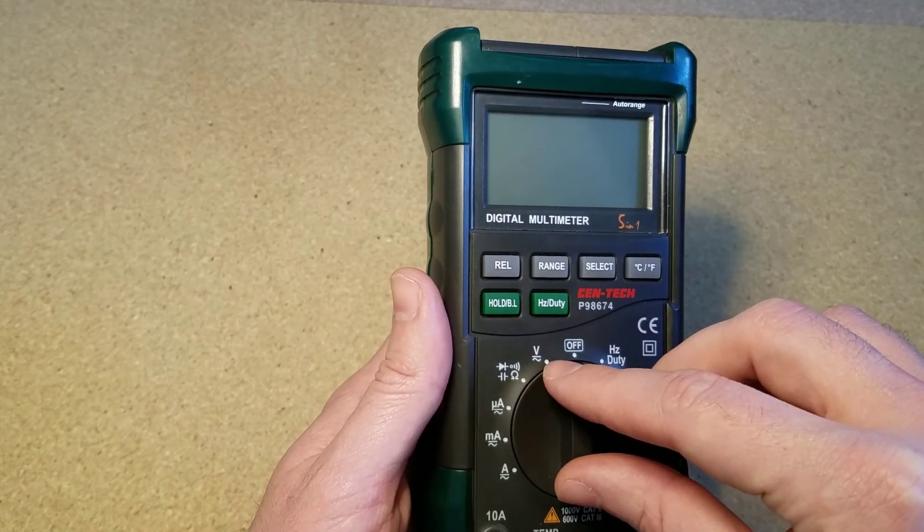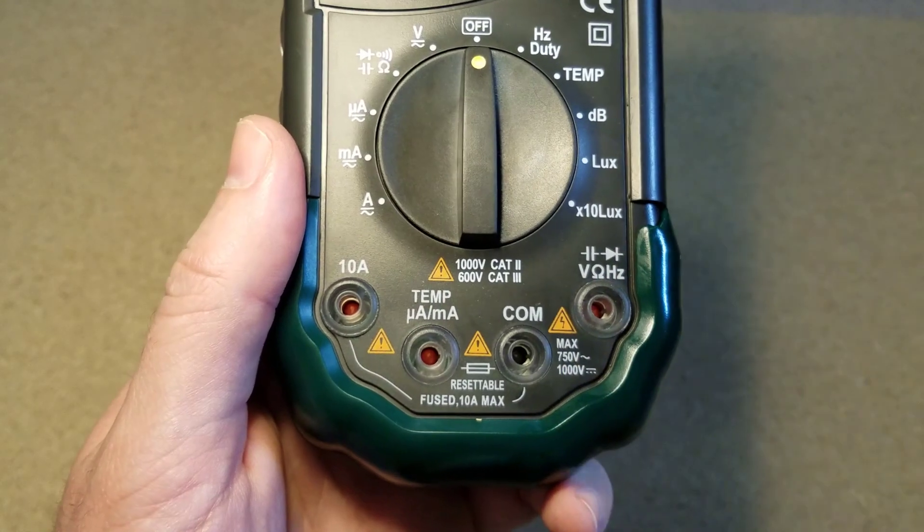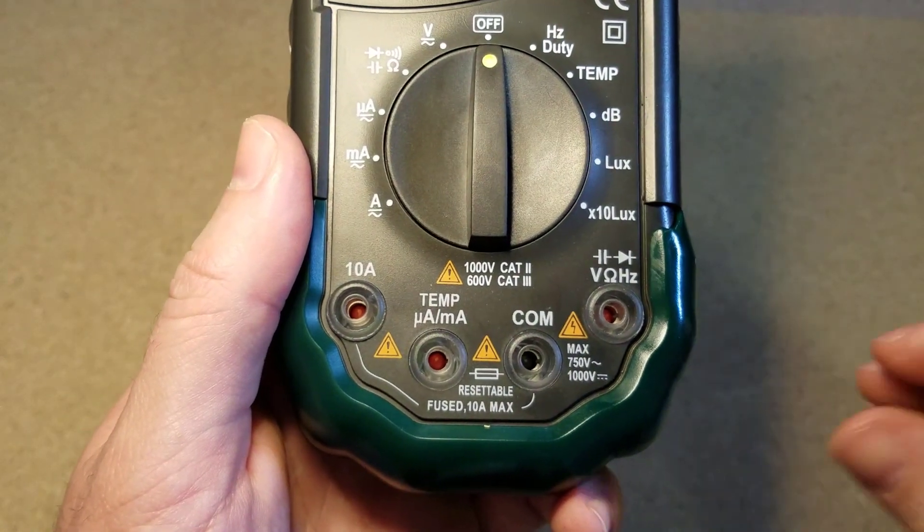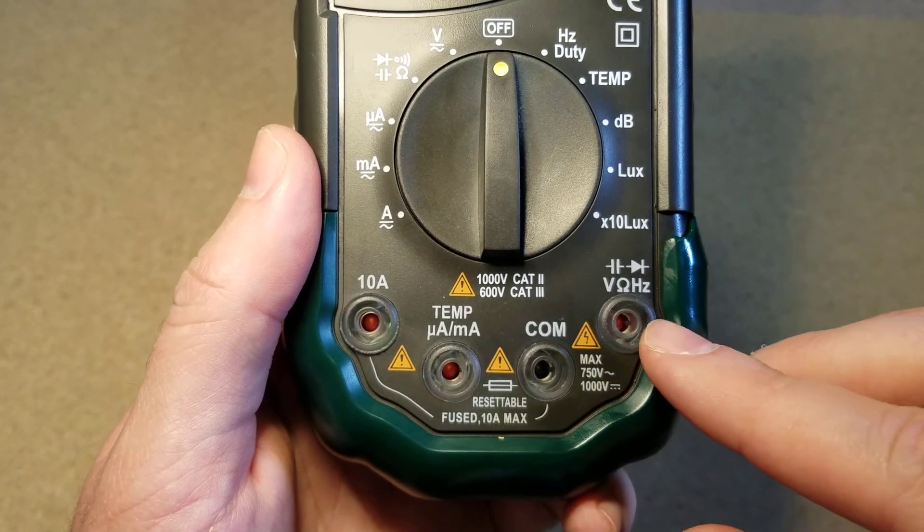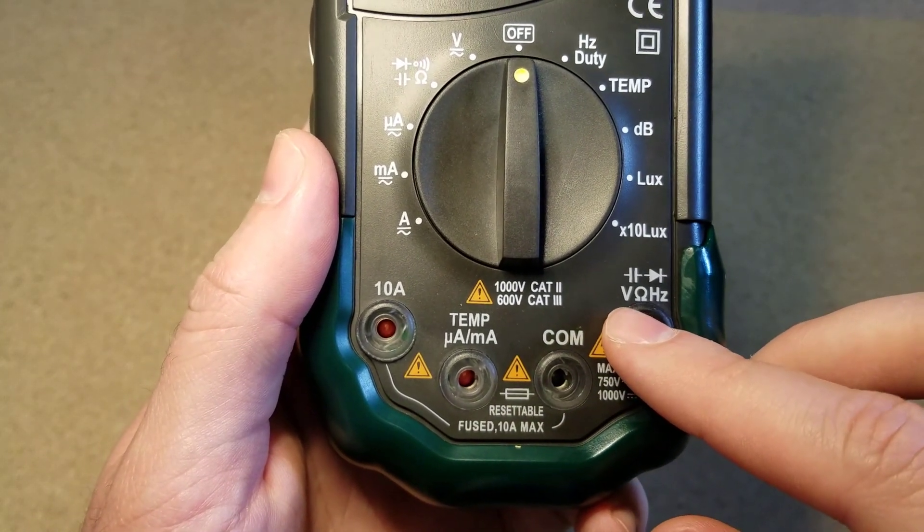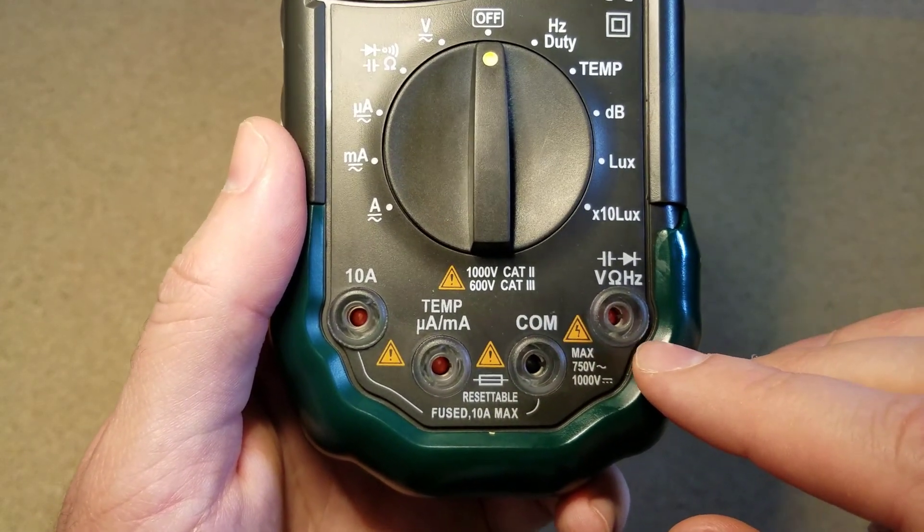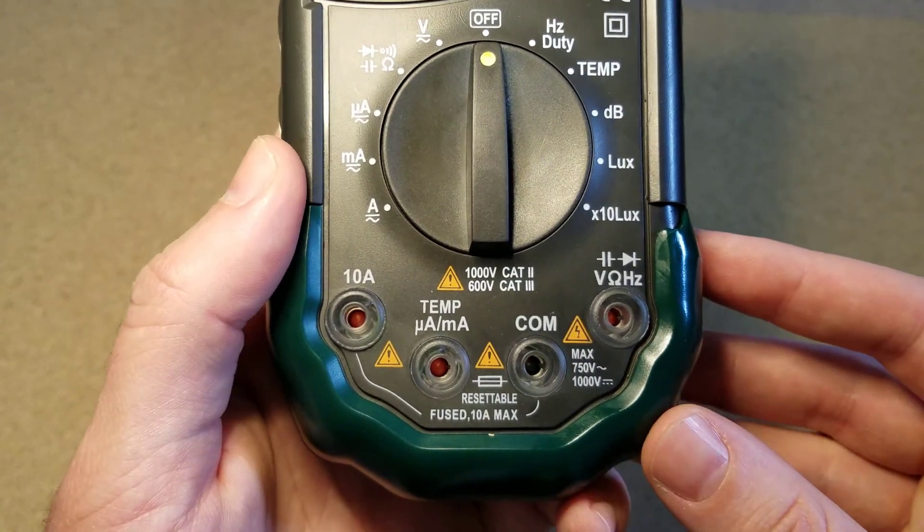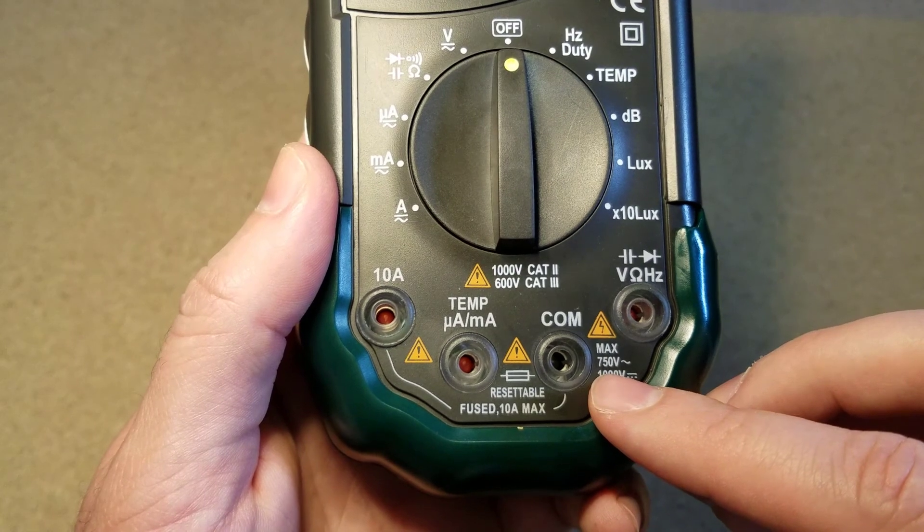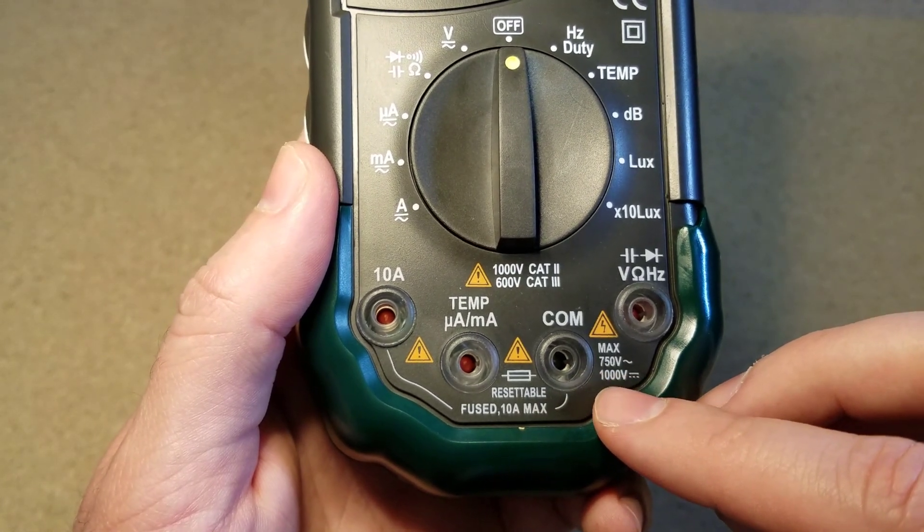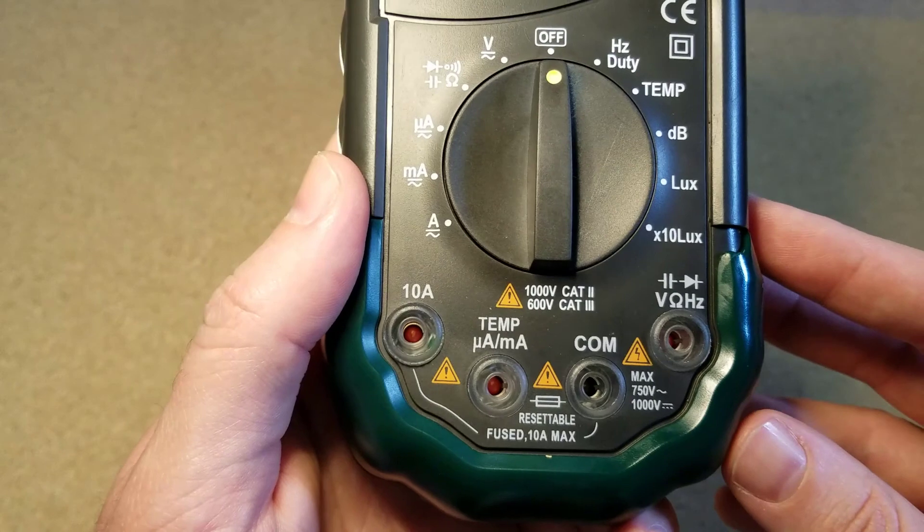To set up our test leads to measure voltage, you're going to connect the black probe to this common terminal and the red one you're looking for the terminal marked with a V for voltage and connect it there. Now one thing to know is the maximum range of the meter. In this case it's 750 volts AC or 1,000 volts DC and you don't want to exceed that. So now let's take a look at a simple example with a battery and see how the meter works.